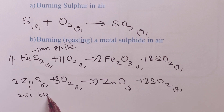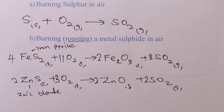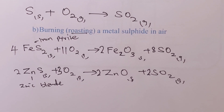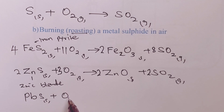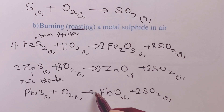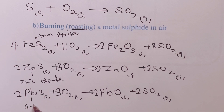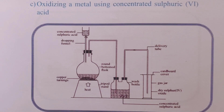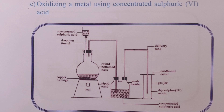We may also use galena, which is lead sulfide. When you roast it in air, we get lead oxide and some sulfur dioxide gas. Balanced with a 2 on the lead sulfide, a 2 on lead oxide, a 3 on oxygen, and a 2 on sulfur dioxide. Method 3 involves oxidizing a metal using concentrated sulfuric acid.